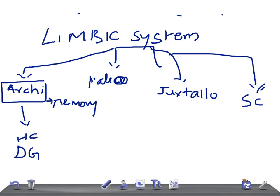Then we have the paleocortical structure. The paleocortical structure is present between the archicortical structure and neocortex, and it's concerned with olfaction or smell. What are the structures present here?